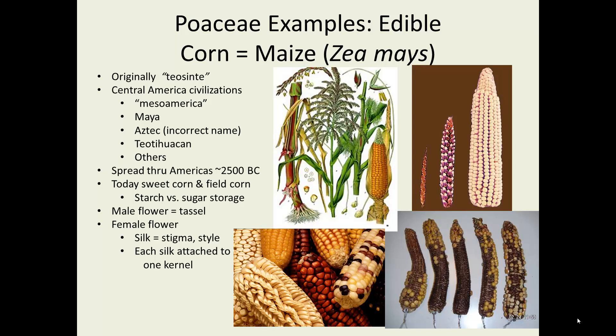In Iowa, you can't talk about the Poaceae without talking about corn. Corn is called maize by almost everybody except folks in the U.S. It originated from a line of species called teosinte. Central American civilizations were the first to notice and use this as a crop. You can see on the upper right the small primordial teosinte grain head on the left, the early days of selection and hybridization in the middle, and the typical modern ear of corn on the far right. Mesoamerican civilizations like the Mayas, Aztecs, and Teotihuacan were the first to cultivate and use these crops. It spread through the Americas by 2500 B.C. and today is very widely grown. Our sweet corn and our field corn both originated from this line.